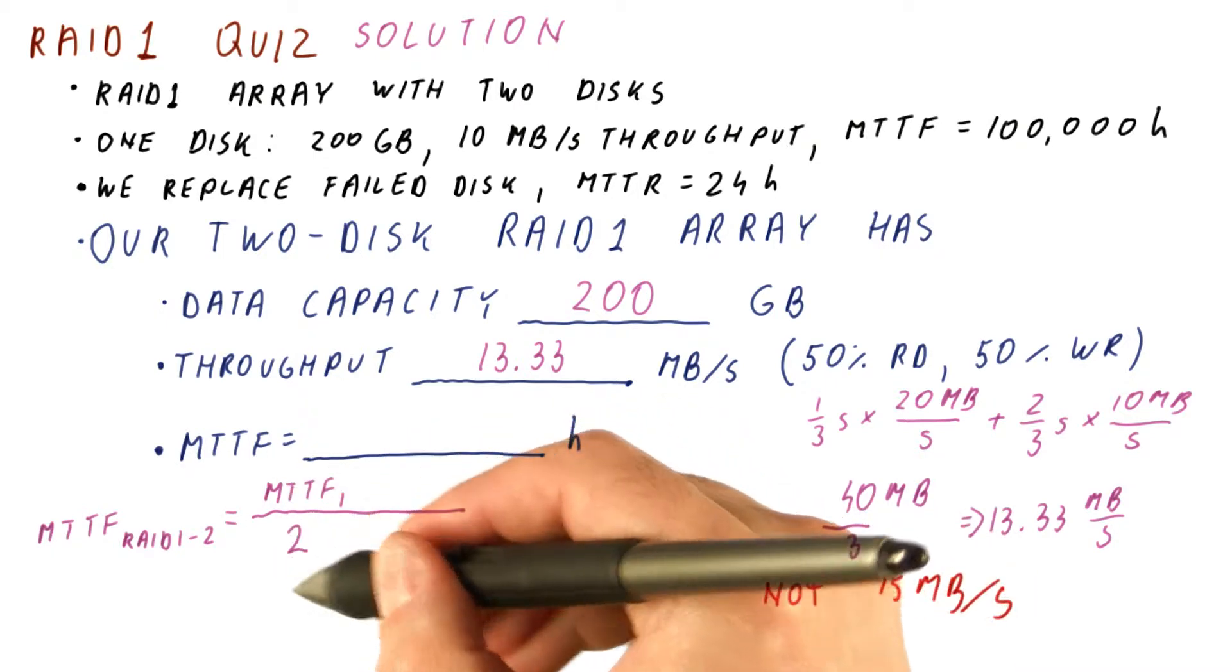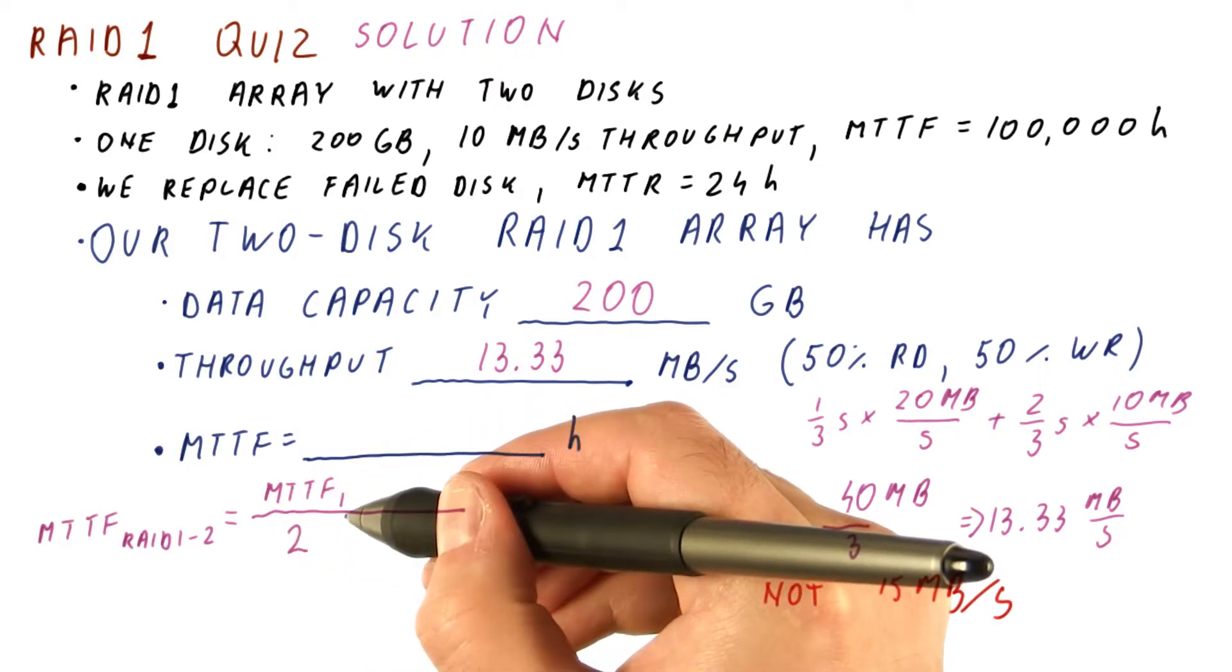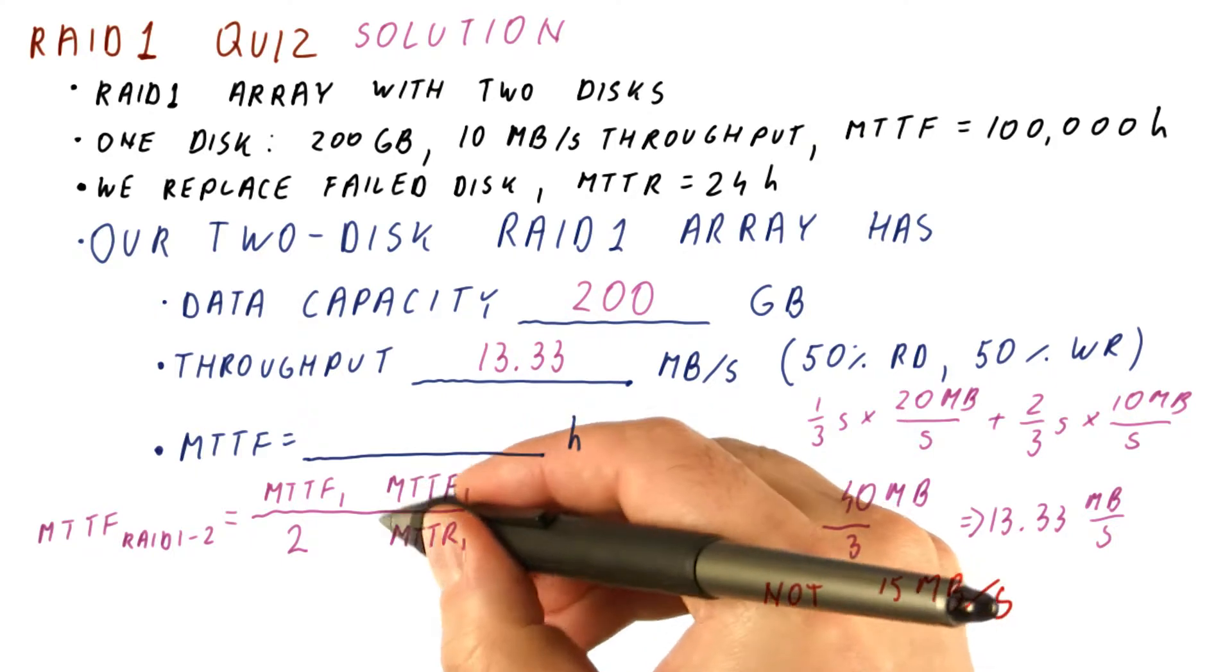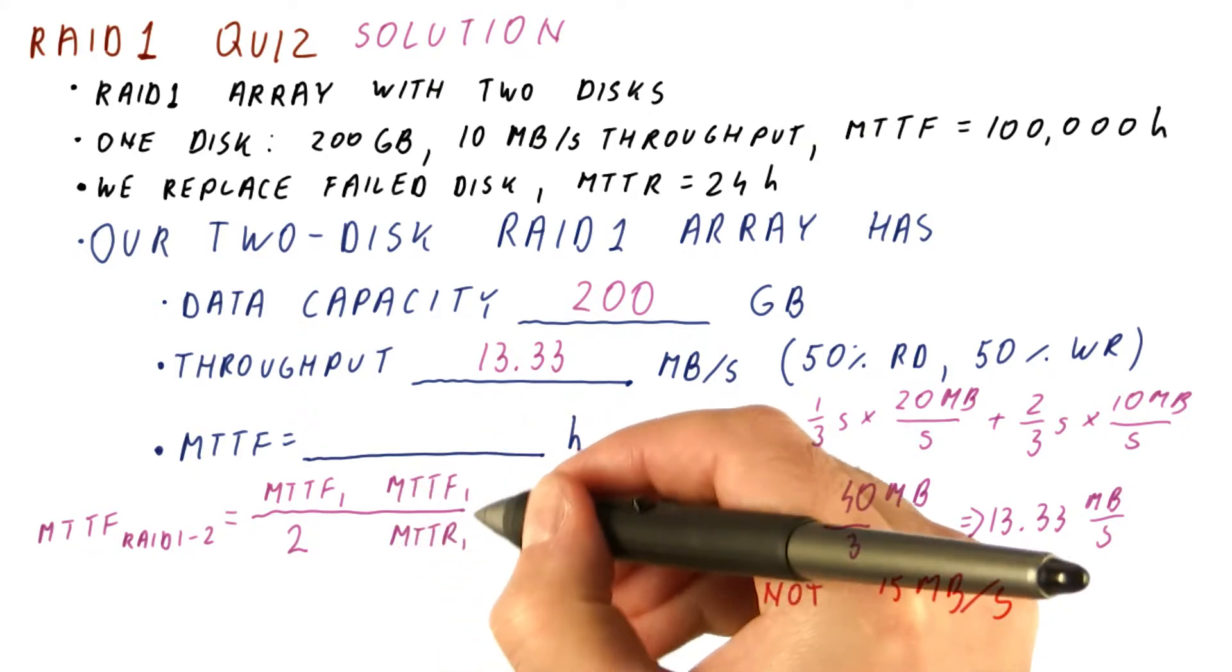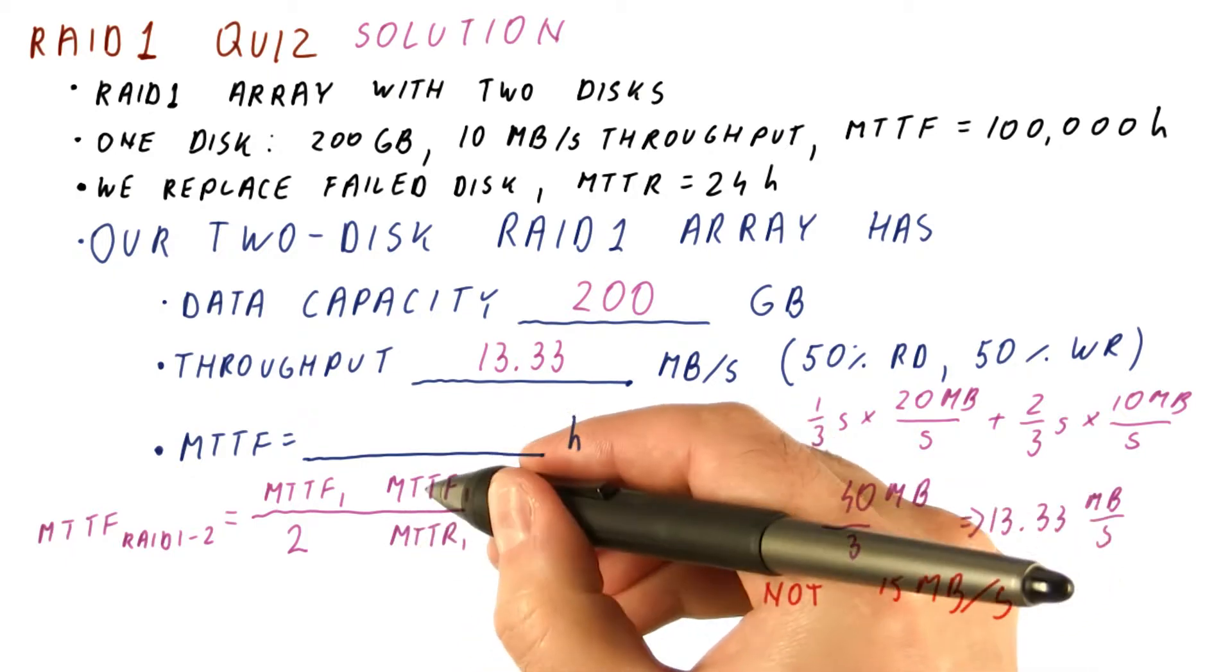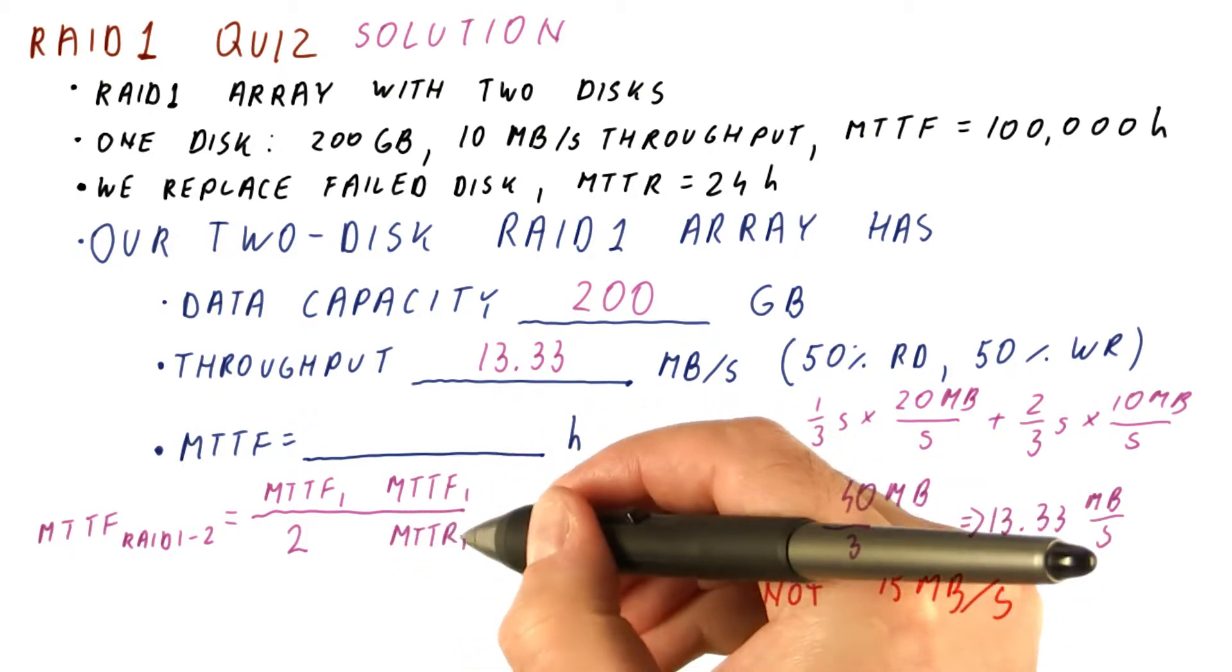And now, each time we have a one disk failure, we need to repair it. And we said that the number of times we can try a repair until we finally experience a failure of the second disk during the repair of the first disk is MTTF of one disk divided by the MTTR of the disk.